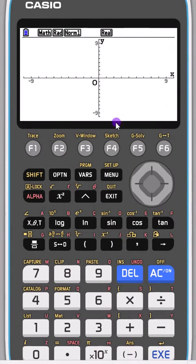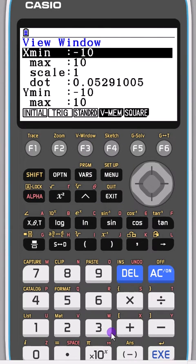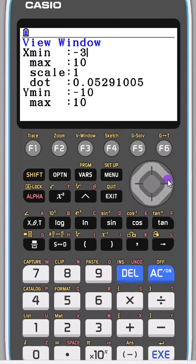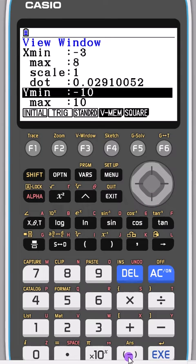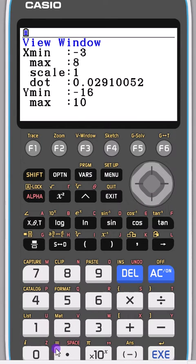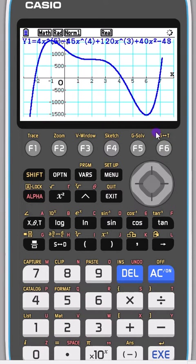So what we need to do is change our view window. I'm going to change the max minimum - our maximum x value is 8. Move down to the y value, we want about minus 1600 and we'll make it up to 1600, and we'll make the scale 500 and draw that. We can see the whole of our graph on here.